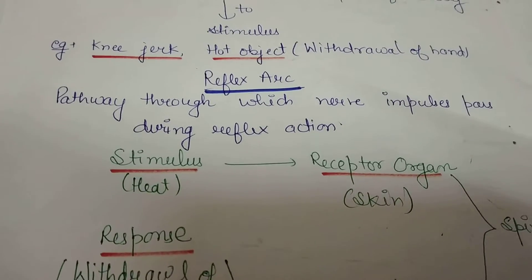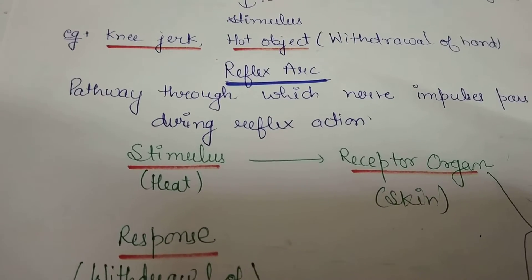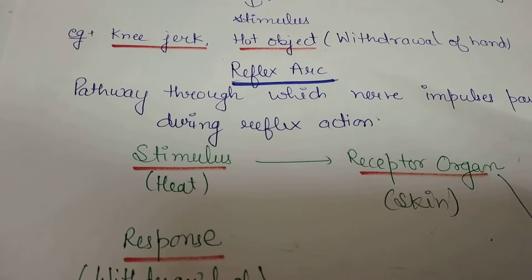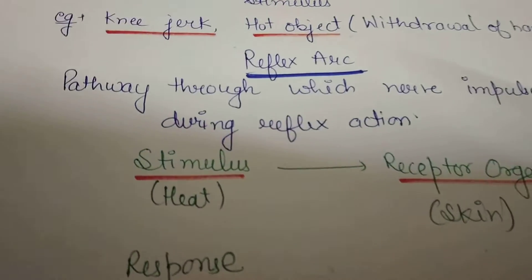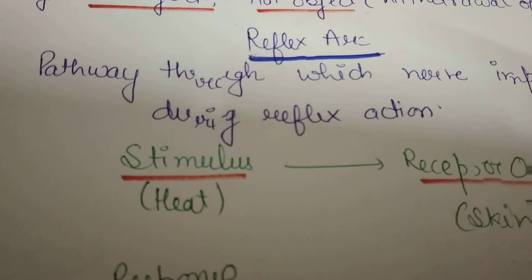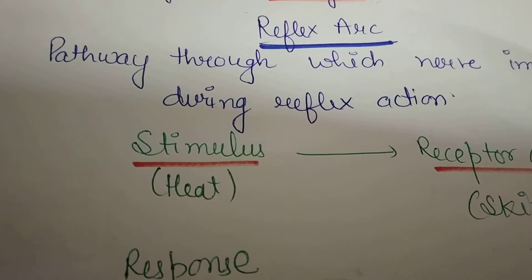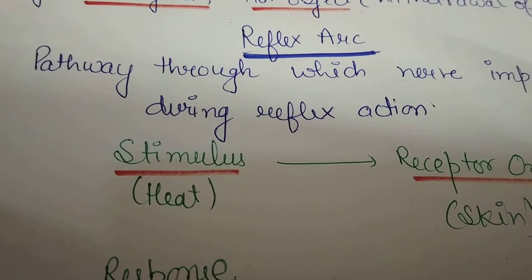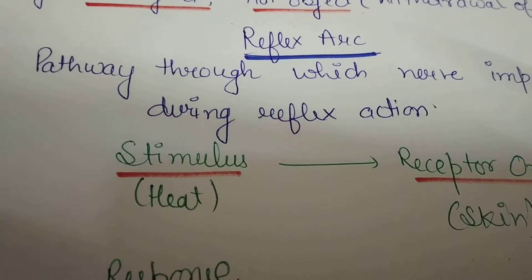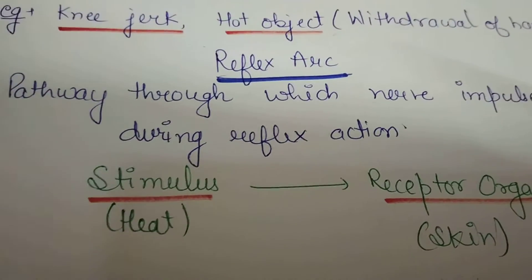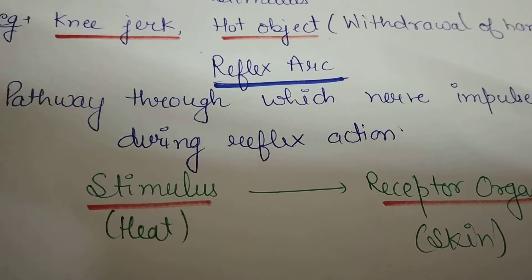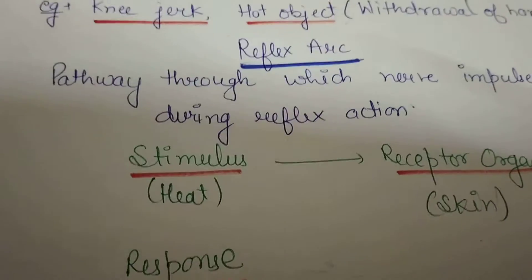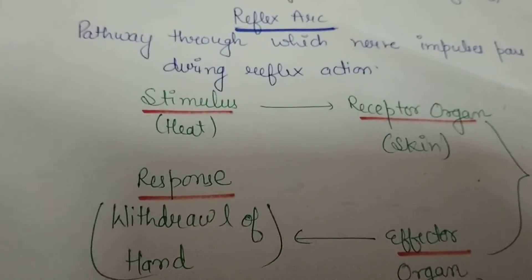Next is reflex arc. It is a pathway through which nerve impulse passes during reflex action. For example, if I go from my home to the market, the path I take is like the reflex arc — and the path through which the signal goes and comes back to the stimulus is the reflex arc.